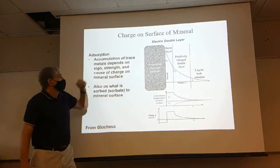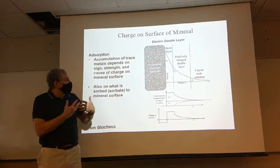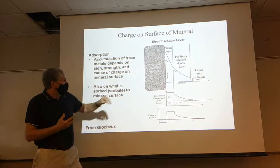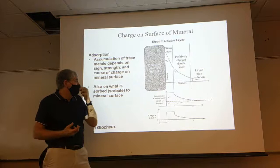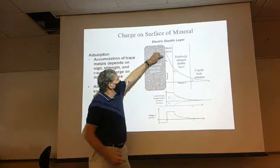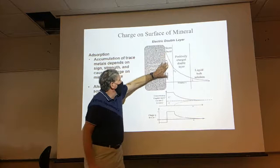Let's look at the charge on the mineral surface — this charge is going to drive everything we're talking about with adsorption. This diagram shows us the distribution of charges we find. This is our charged mineral surface — in this case shown as a negative charge — and as we get further and further away from that mineral surface, you can see the charge decreases. We can measure that charge.